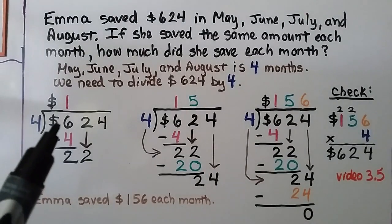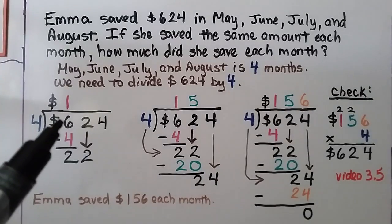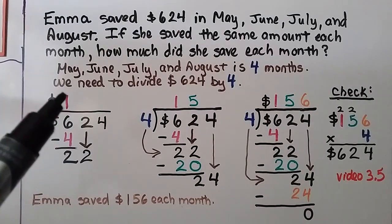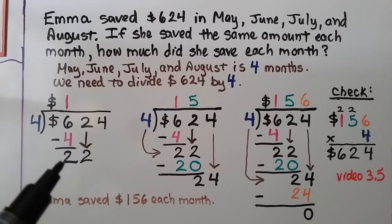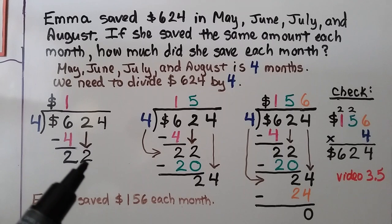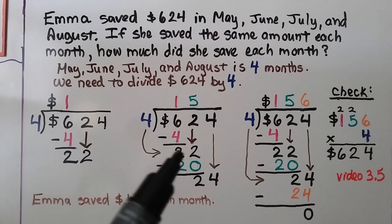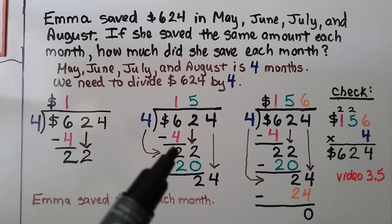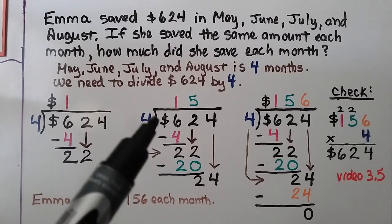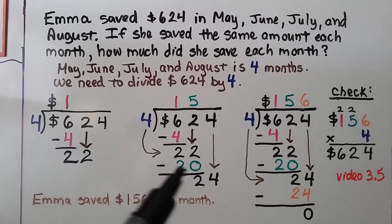We write our division problem: $624 divided by 4. We ask ourselves how many times can 4 fit into 6 — one time. We write our 1 up here. 4 times 1 is 4. We do our subtraction and get a 2. Now it's the 2's turn to come down. There's a 22 here. We ask how many times can 4 fit into 22 — 5 times, because 4 times 5 is 20. We write the 5 up here and the 20 here.